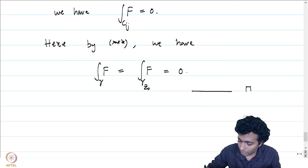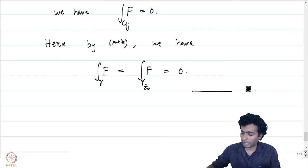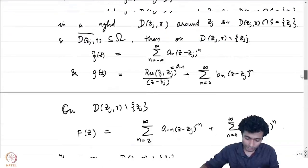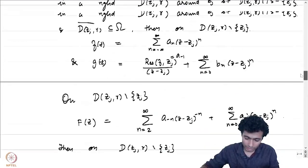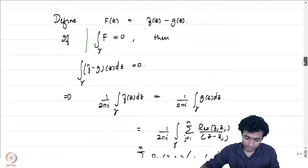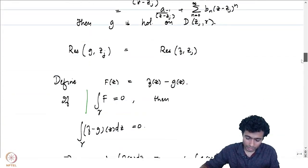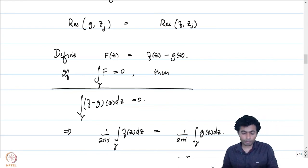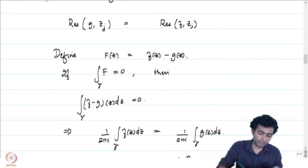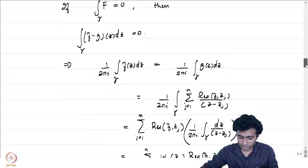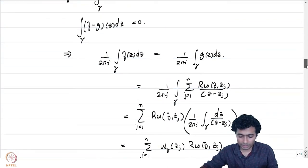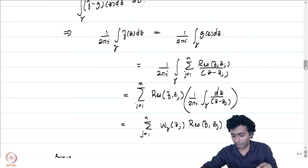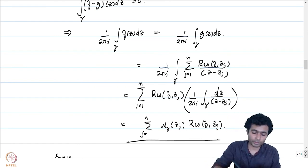We have established that the integral of small f equals the integral of capital F over gamma, and since that integral is 0, the earlier computation gives (1/2πi) times the integral of f over gamma equals the sum of w(gamma, z_j) times Res(f, z_j), which is precisely the residue theorem. This completes the proof.